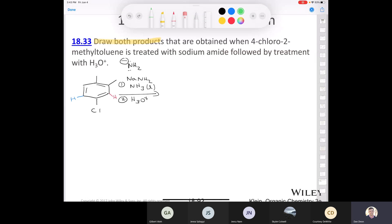Alright, so in this question 18.33, it says draw both products. There's two products that are going to be formed here when we take 4-chloro-2-methyltoluene and hit it with sodium amide followed by treatment with H3O+, so we want to hit it with some dilute acid in the end.